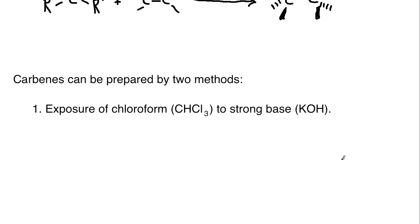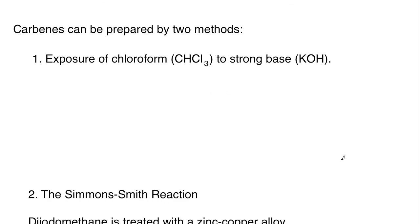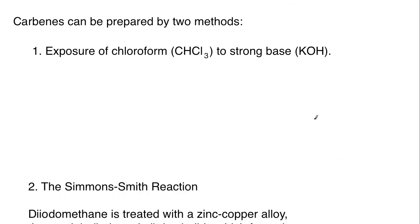Carbenes can usually be prepared by two different methods. The first one that's very well known is the exposure of chloroform, which is CHCl3, to a strong base. Potassium hydroxide is a typical one that is often shown in texts. So, if we take a look at this, we have chloroform. The chloroform would be a regular tetrahedral type structure with the chlorines, a hydrogen (only one though), and then the additional chlorines. The hydroxide is going to initiate this reaction.